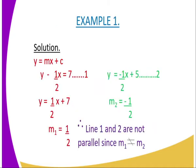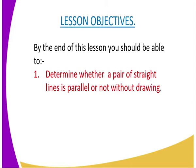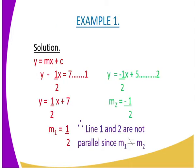There is an example here with a question. You are asked to determine whether the equations of these two lines are parallel or not. Line 1 is given as y minus half x equals 7, and line 2 is given as y equals negative half x plus 5.